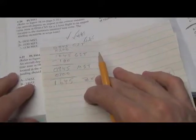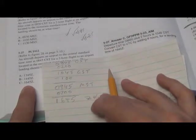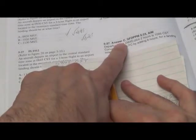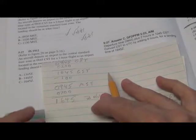And let's see if there's a 1645 choice. There it is, 1645 Zulu, answer C, and if you look over here, the answer C is correct. It's as simple as that. They're all like that. Let's do another one.